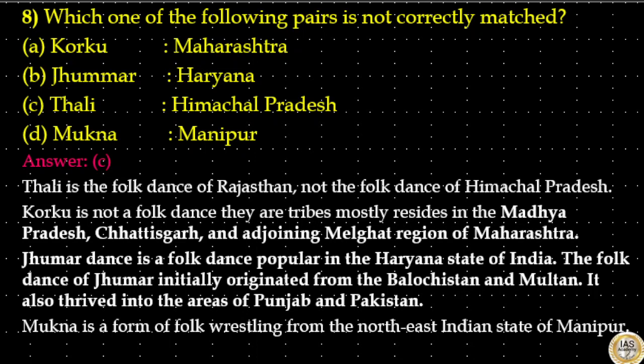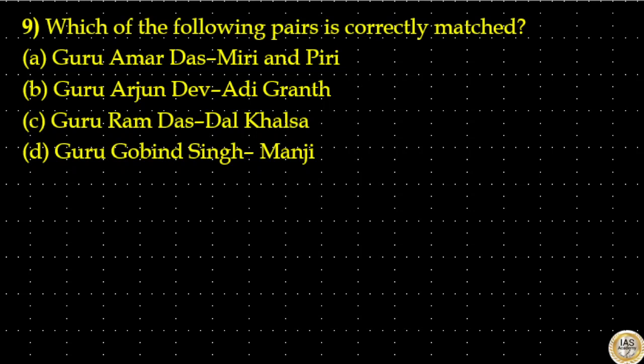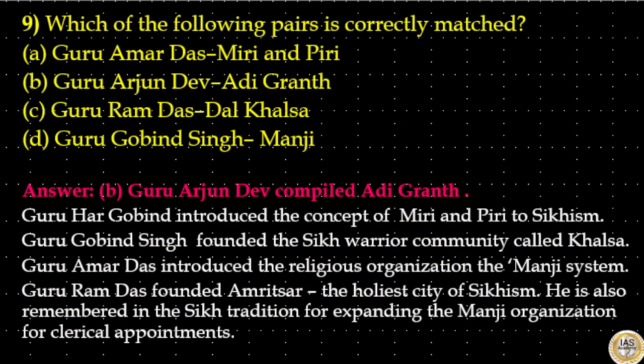Which of the following pairs is correctly matched? Option A: Guru Amar Das — Miri and Piri (incorrect). Option B: Guru Arjun Dev — Adi Granth (correct). Option C: Guru Ram Das — Dal Khalsa (not correct). Option D: Guru Gobind Singh — Manji (incorrect). The answer is option B. Guru Arjun Dev compiled the Adi Granth. Guru Har Gobind introduced the concept of Miri and Piri to Sikhism. Guru Gobind Singh founded the Sikh warrior community called Khalsa. Guru Amar Das introduced the religious organization called the Manji system. Guru Ram Das founded Amritsar, the holiest city of Sikhism, and is also remembered for expanding the Manji organization for clerical appointments.